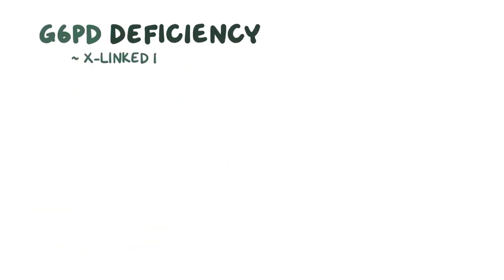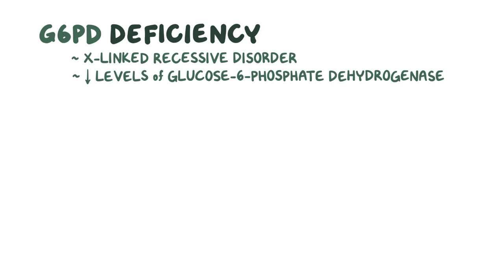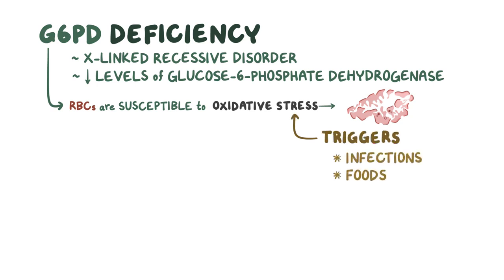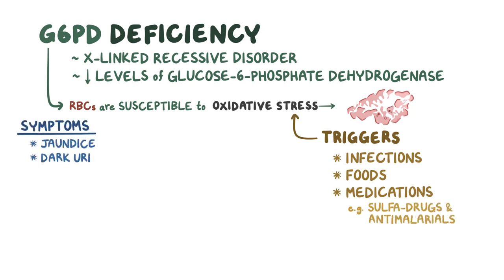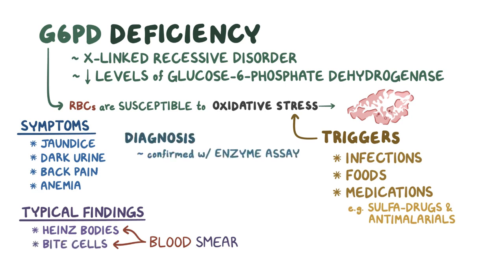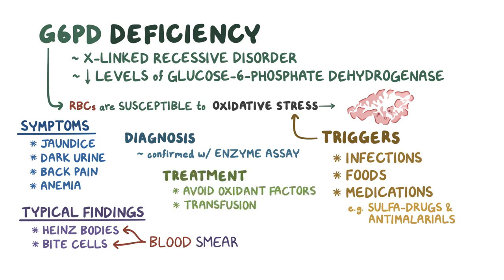As a quick recap: G6PD deficiency is an X-linked recessive disorder characterized by low levels of glucose 6-phosphate dehydrogenase. Red blood cells are susceptible to oxidative stress, which results in hemolysis, usually in response to certain triggers like infections, foods like fava beans, and medications like sulfa drugs and antimalarials. Symptoms include jaundice, dark urine, back pain, and anemia. Typical findings on the blood smear are Heinz bodies and bite cells. Diagnosis can be confirmed with an enzyme assay. The mainstay of treatment is to avoid oxidant factors, but a transfusion might be needed if the hemolysis is severe.